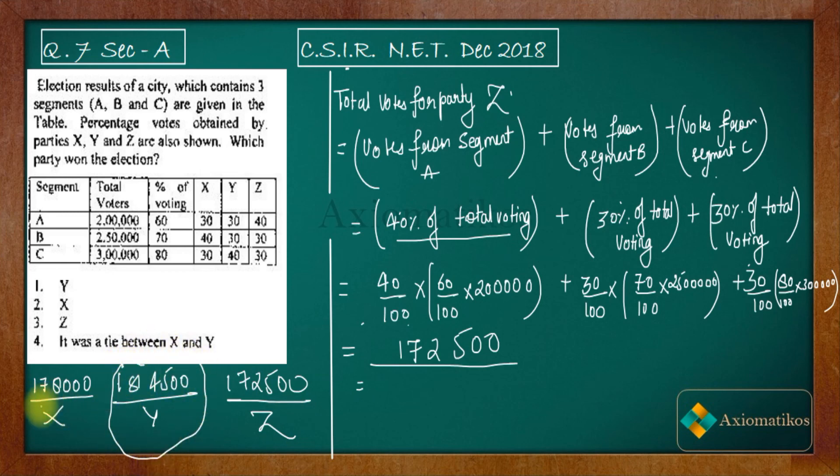So clearly Y is getting more number of votes than X and Z. That is why your answer Y will be true. Y will win the election because it has more number of votes and all other remaining options will be false. So this is how we can actually solve this problem.